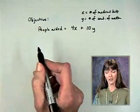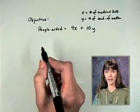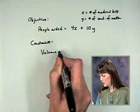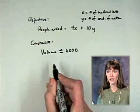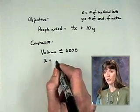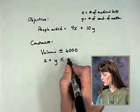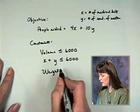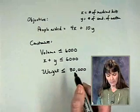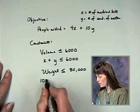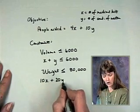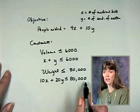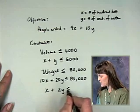We have constraints from the volume and weight limits. The volume constraint is x plus y is less than or equal to 6,000 cubic feet. The weight constraint is 10x plus 20y is less than or equal to 80,000. Dividing the weight constraint by 10 gives us x plus 2y is less than or equal to 8,000.